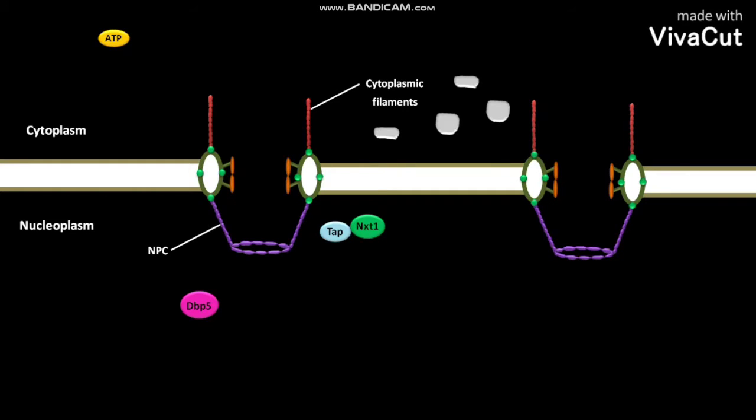In the nucleoplasm of a cell, the transcription produces an mRNA protein complex or mRNA-PS.